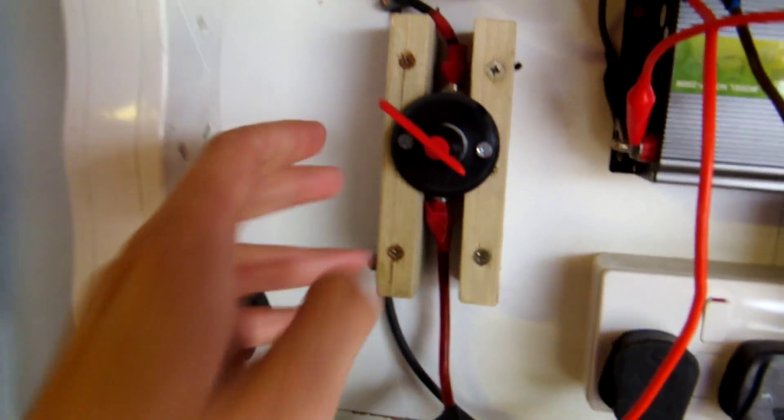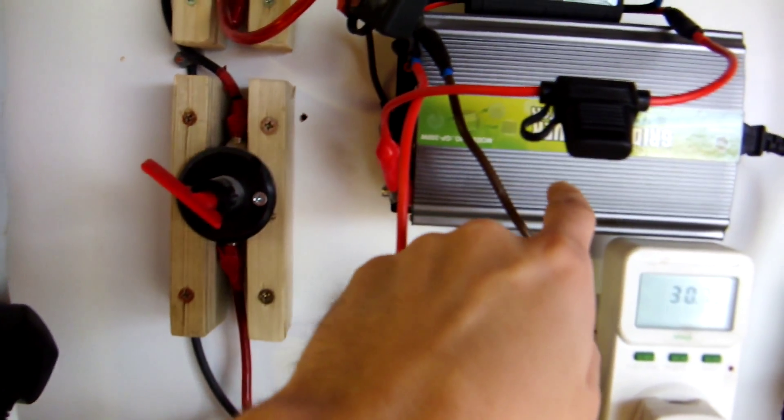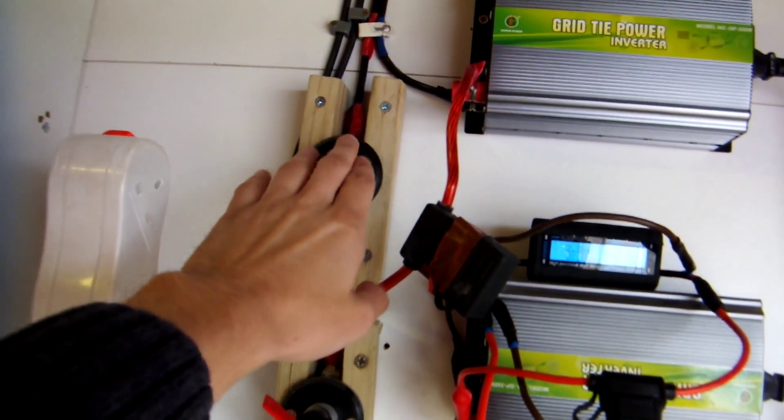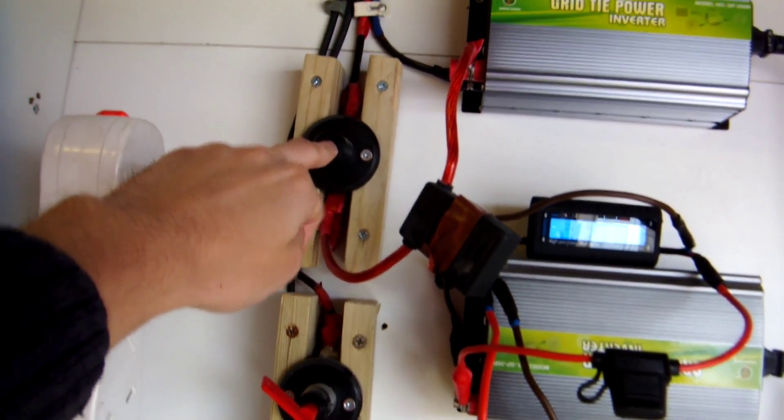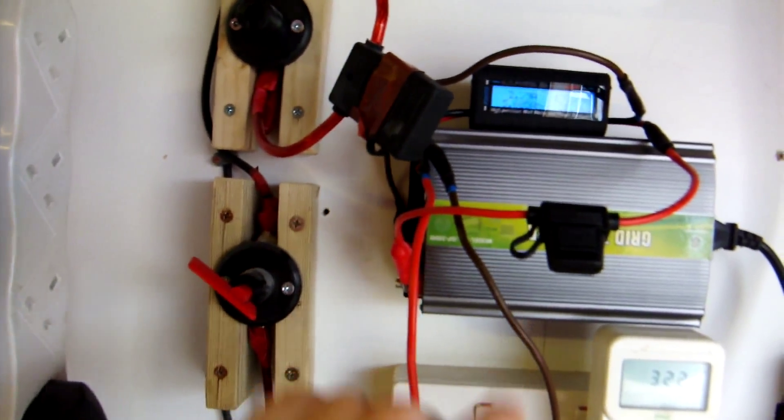Now what this does is it will tell you exactly how much power you've got going through. So the way that I've got this wired up is we've got the power coming down from the panels here and normally it would be going through to the inverter. So we've got two sets of cables, one set with three panels on it going to one inverter and another set of three panels going to the other inverter.